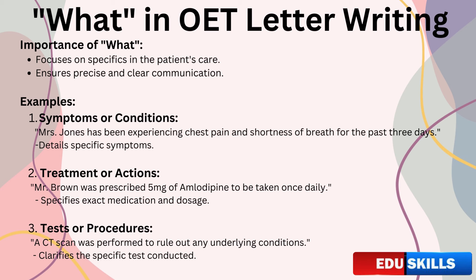Example one: asking about symptoms or conditions. When writing about the patient's condition, you might need to specify what symptoms they are experiencing. For example: 'Mrs. Jones has been experiencing chest pain and shortness of breath for the past three days.' Here, what identifies the specific symptoms relevant to the patient's condition. Example two: specifying treatment or actions. When outlining the treatment plan, what helps you detail the actions that need to be taken. For instance: 'Mr. Brown was prescribed 5 milligrams of amlodipine to be taken once daily.' Here, what specifies the exact medication and dosage.